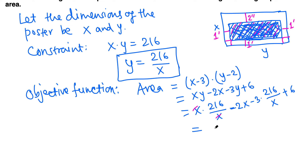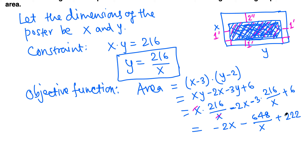After substitution, minus 3 times (216 over x) gives negative 648 over x. So the area function simplifies to A equals 216 minus 2x minus 648 over x plus 6, which combines the constants to give A equals 222 minus 2x minus 648 over x.